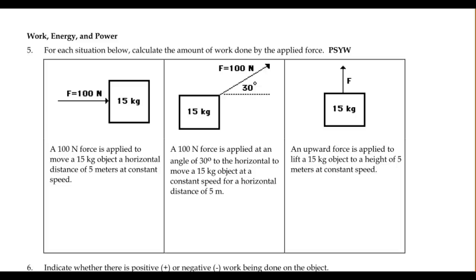In this section we'll be using the definition of work to do some calculations of how much work is done under various conditions. In this first one we have a 100 newton force that's being applied to a 15 kilogram mass. And the object is going to move a distance of 5 meters. It's also moving at constant speed.